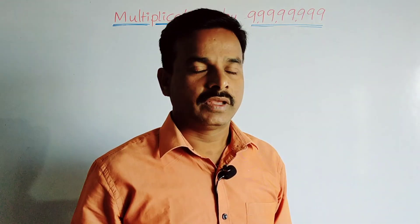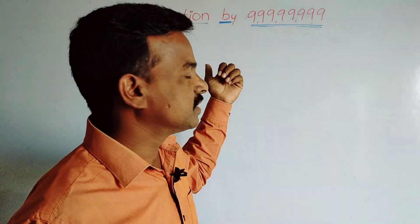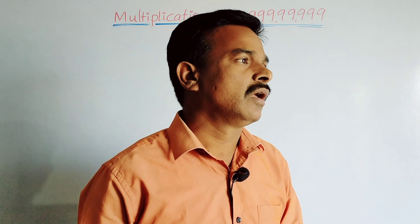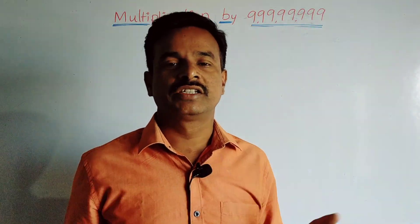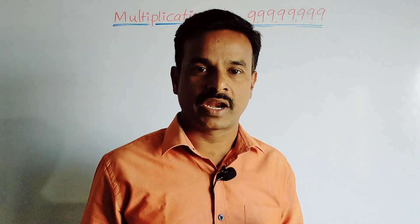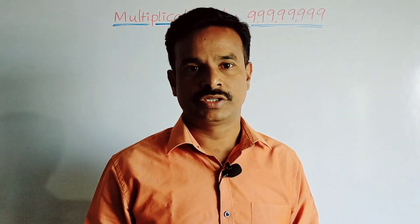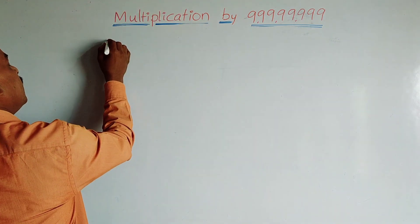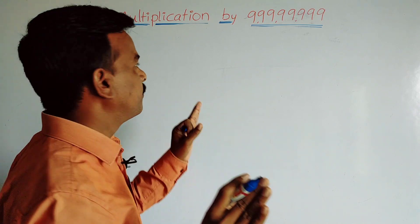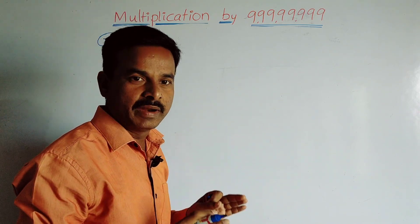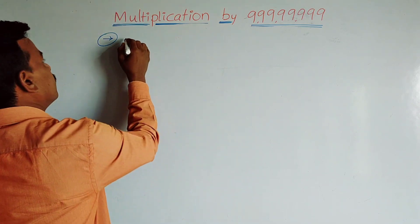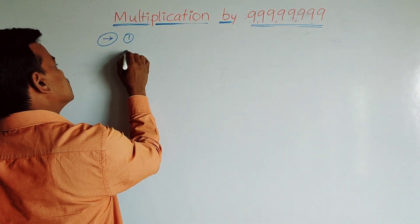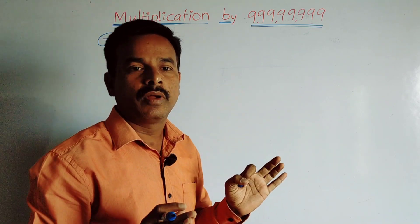How is it possible? Yes, it is possible by using very special mathematics tricks and mathematics sutras. I will explain this now. In this video I'm going to explain two types of multiplication tricks. The first trick is for a certain type of multiplication — specifically when the number of digits in the multiplicand is equal to the number of digits in the multiplier.